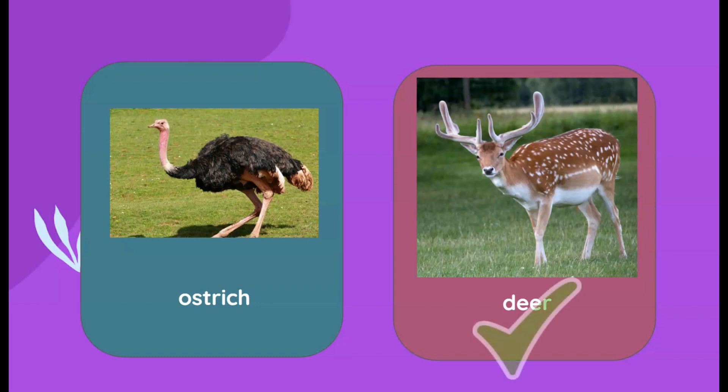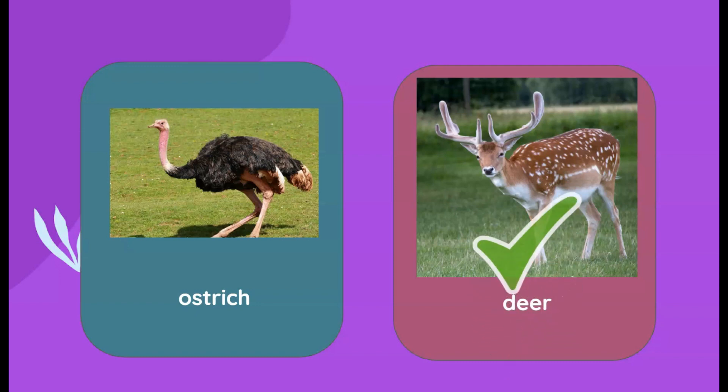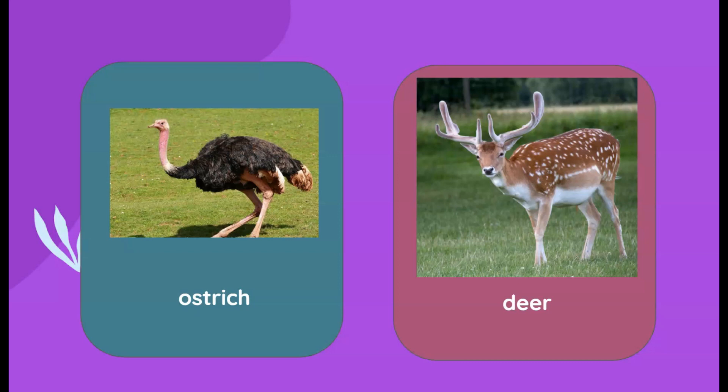Which one is the mammal here — is it the ostrich or the deer? The ostrich has feathers on its body, so the ostrich is a bird — it is not a mammal. The deer is the mammal here.